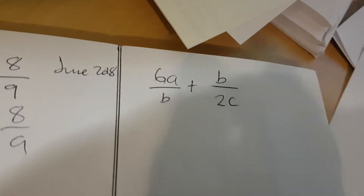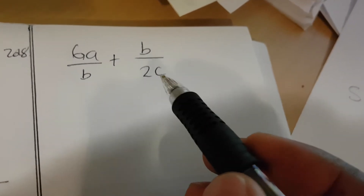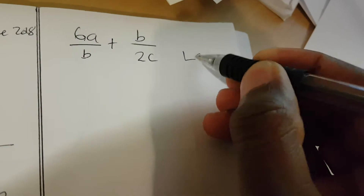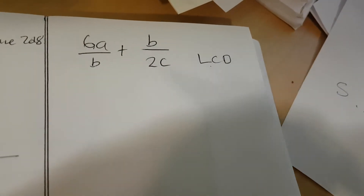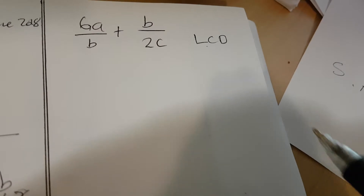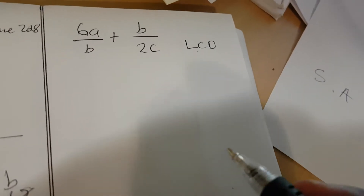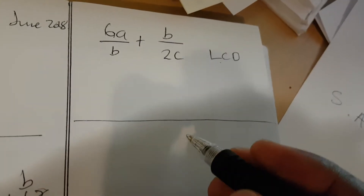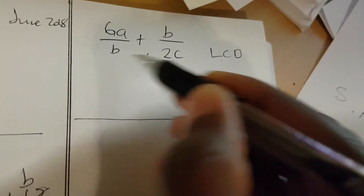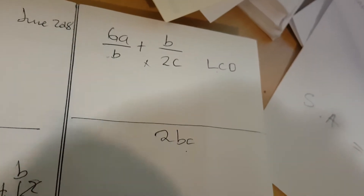Now let's move to addition of fractions. We have numerators and denominators, and the denominators are not similar. We must find the LCD — the lowest common denominator. We do that by multiplying the two denominators: B times 2c gives an LCD of 2Bc.